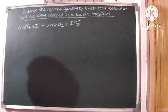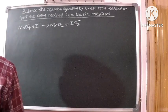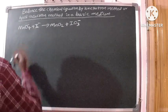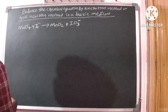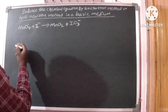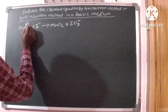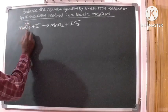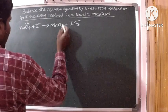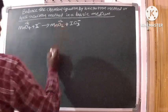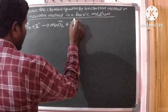Now we can write the oxidation number of each element using the rules of ascending oxidation numbers. As per these rules, the oxidation number of oxygen is minus 2 in compounds. Therefore, the oxidation number of oxygen is minus 2 in MnO4⁻, in MnO2, and in IO3⁻.